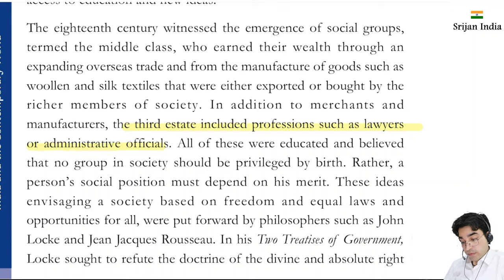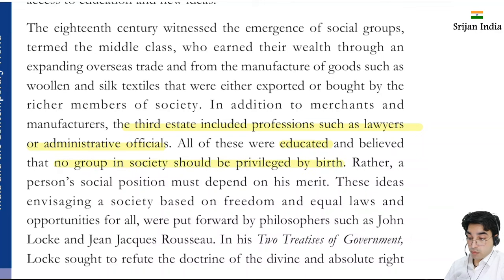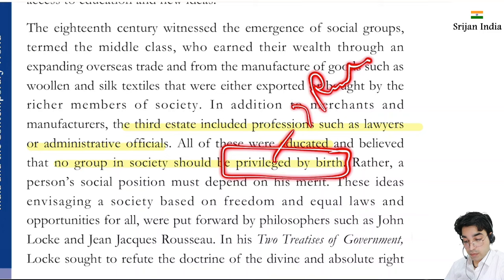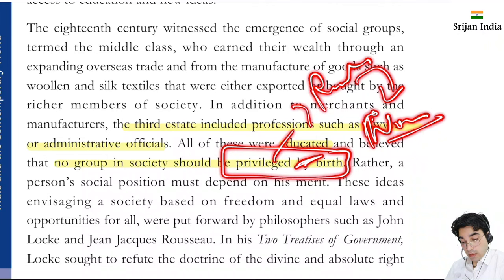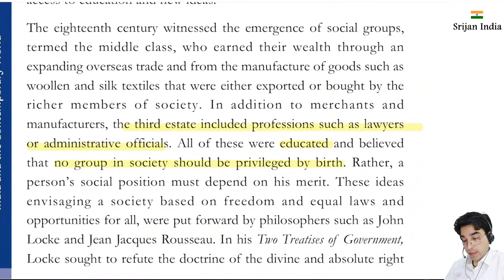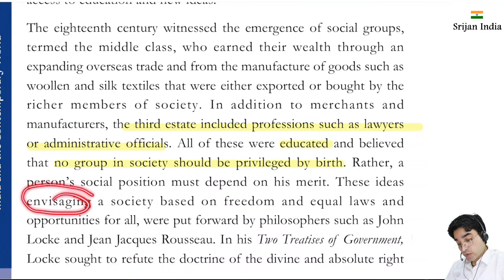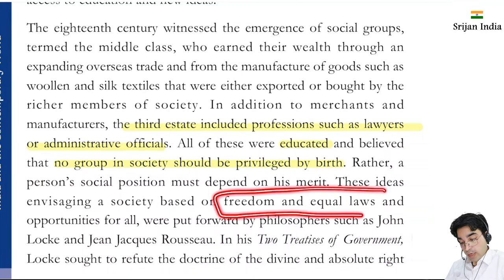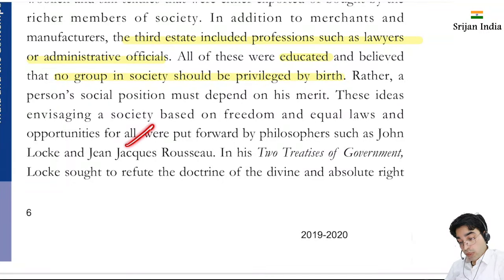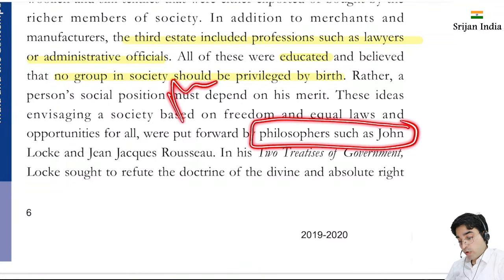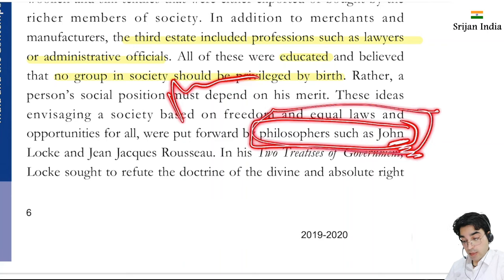All of these educated people believed that no group in society should be privileged by birth. When education is received, people realize that rights should not be determined by birth but by work - birth should not be the criterion, work should be. Rather, a person's social position must depend on his merit. These ideas envisaged a society based on freedom, equal laws, and opportunity for all. This is where the philosophers come in - their names are very common when we study polity.